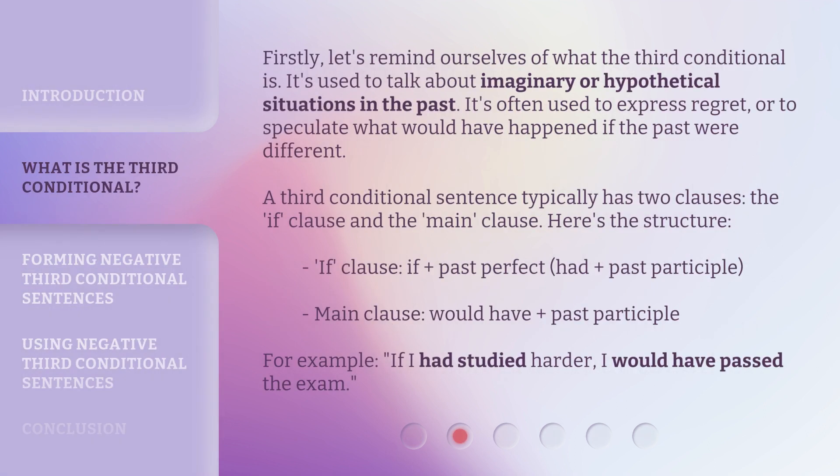Firstly, let's remind ourselves of what the third conditional is. It's used to talk about imaginary or hypothetical situations in the past. It's often used to express regret or to speculate about what would have happened if the past were different. A third conditional sentence typically has two clauses: the if clause and the main clause. Here's the structure — if clause: if plus past perfect (had plus past participle); main clause: would have plus past participle. For example: if I had studied harder, I would have passed the exam.